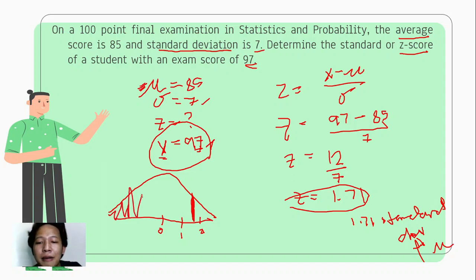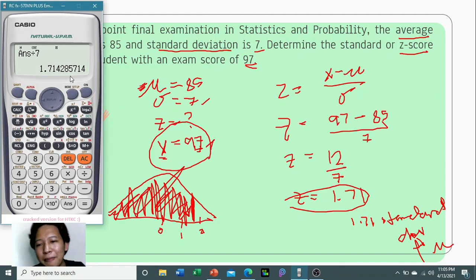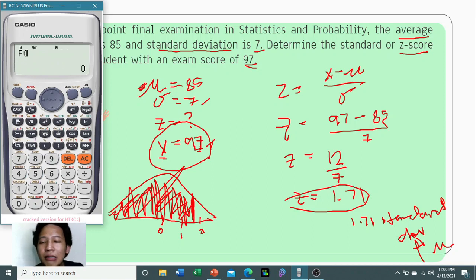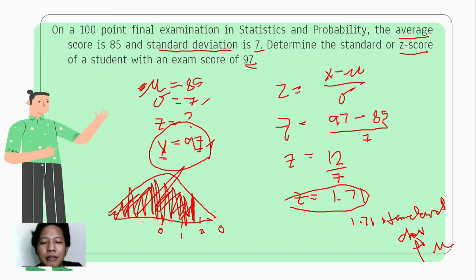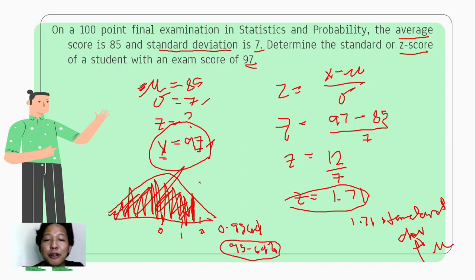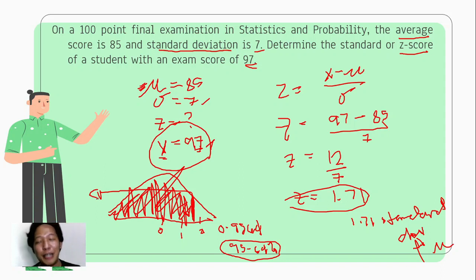Now, what is the area under the curve? Applying what we learned from the previous video, we use the distribution function from the left. For z = 1.71, that gives us 0.9564. This means 95.64% of the population has a score of 97 or below.